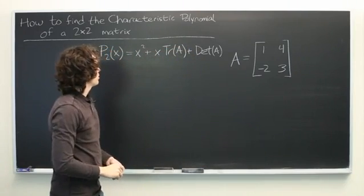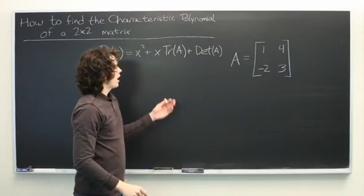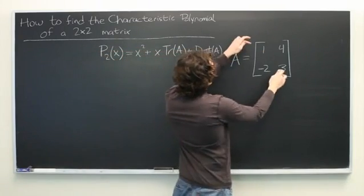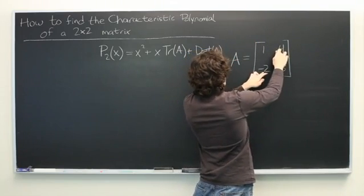Where the trace is the sum of the entries along the main diagonal, and the determinant is the product of the entries on the main diagonal minus the product of the entries on the opposite diagonal.